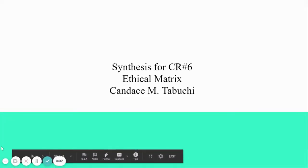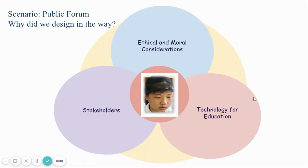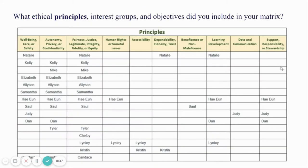Hi, this is Candice. This is my synthesis for our Critical Reflection number 6. The scenario was that we were putting together a public forum and how we can begin to discuss the possible implementation of these brainwave trackers. We used a template that laid out a design on how we can consider the ethical and moral issues of technology use in education, and also the various stakeholders we would see at this public forum. I put together a little matrix here on what ethical principles we included.